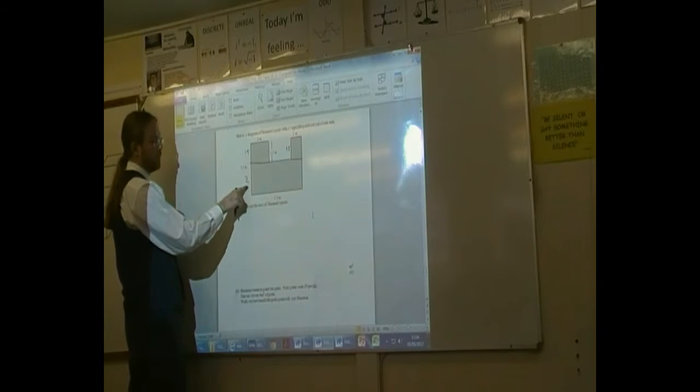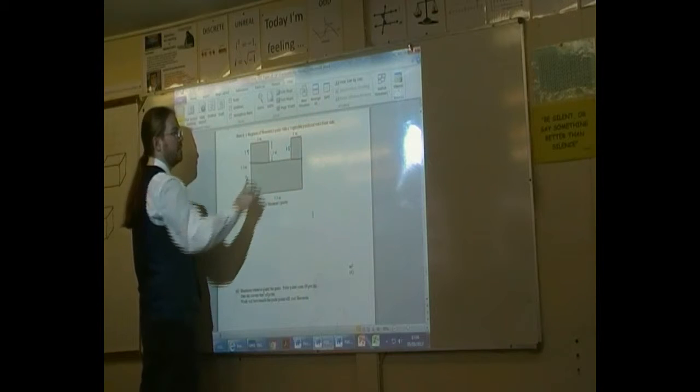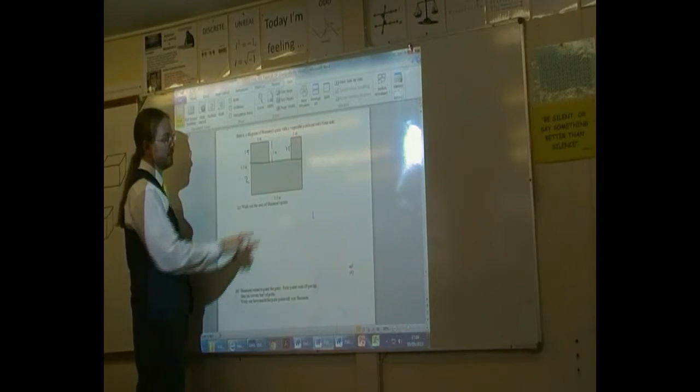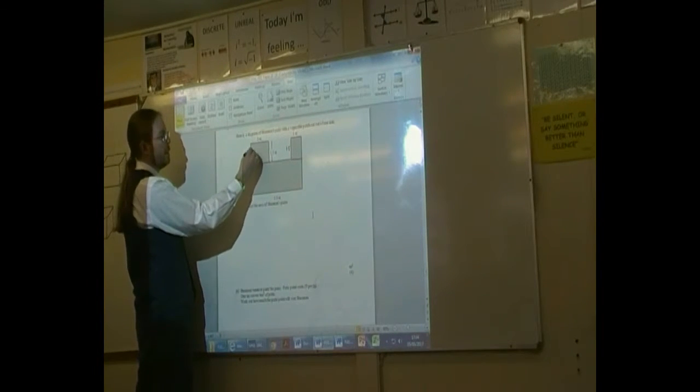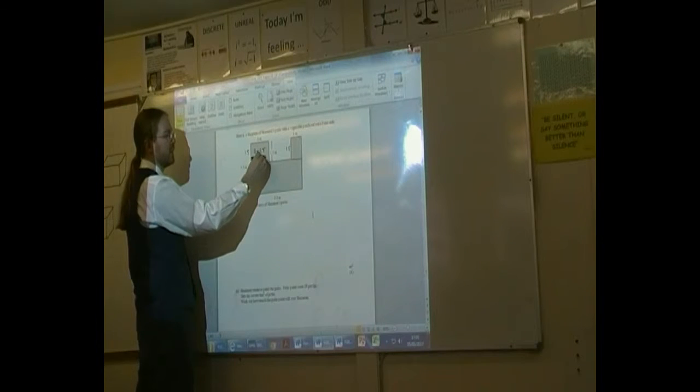So each area, we've got two numbers, and for area we multiply the base times the height. So this one here, the base is 2, the height is 1.5, so that gives us 3 metres squared.